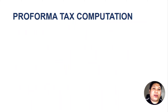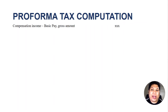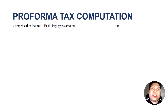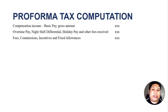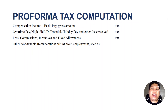We have here a pro forma computation of the tax — this is the formula or template. We will first have the compensation income, which is the basic pay at gross amount, meaning the figure before deducting anything. Then we add overtime pay, night shift differential, holiday pay, other fees received, commissions, incentives, and other fixed allowances which form part of the basic compensation income of the employee.